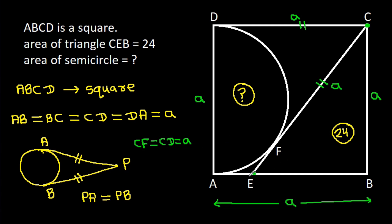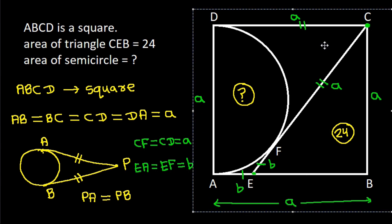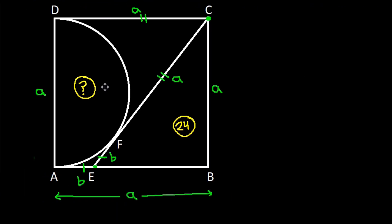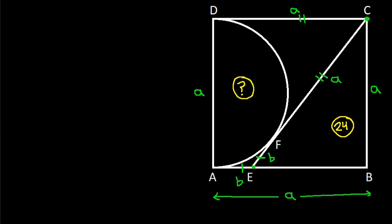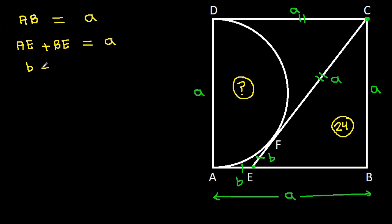From point E, EA = EF. Suppose EA = EF = B. Now, AB = AE + BE = A, so BE = A - B.